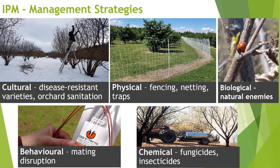Behavioral strategies involve anything that alters the behavior of the pest within the orchard, most commonly by disrupting the ability of males to find female insects for mating. That's commonly used in apple and tender fruit orchards but not so much in Ontario hazelnuts. However, in Oregon they do use mating disruption to manage filbert worm. It's not currently a problem in Ontario and not currently registered for use, but it is something we can consider if it becomes a problem in the future.